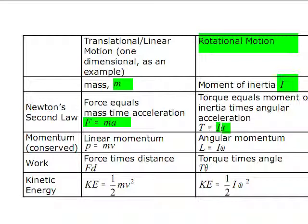Now look at momentum. Linear momentum is p equals mass times velocity. Angular momentum is moment of inertia times omega.